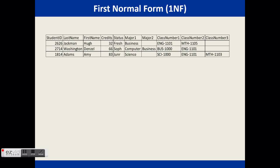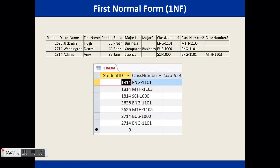I used a class number here — a class ID would be a better key. We have three classes here, but a student may have more than three classes. So the improvement would be to add a classes table with a student ID and a limitless number of classes.